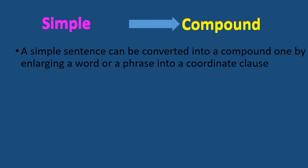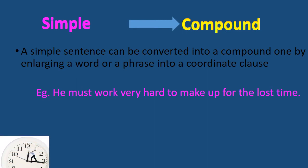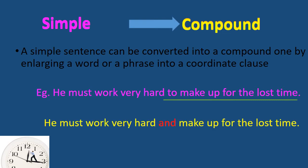There is a phrase in a coordinate clause. For example: 'He must work very hard to make up for the lost time.' The phrase 'to make up for the lost time' is what we will convert into a coordinate clause. The result is: 'He must work very hard and make up for the lost time.' Here, 'and' is a conjunction.